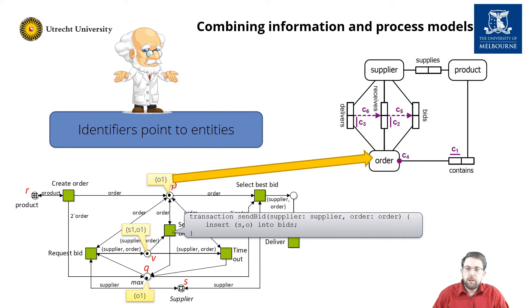We can resemble this by associating a transaction to the transition. In this case, the transition send bid inserts a tuple with the supplier s1 and order o1 into the bid relation, as induced by the mode. That means that we use the mode of the transition to instantiate the transaction. Thus, firing the transition send bid with the mode that assigns o1 to the variable order, and s1 to the variable supplier, results in adding a tuple into the bids relation, like this.